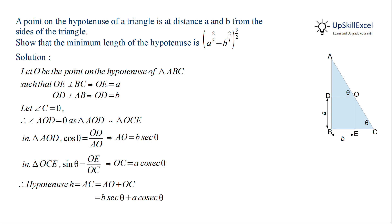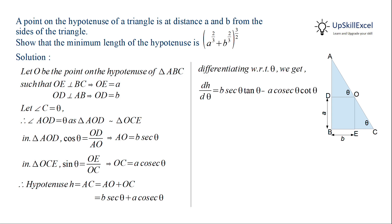To minimize the length of the hypotenuse, we differentiate H with respect to theta. This gives dH over d theta equal to B sec theta tan theta minus A cosec theta cot theta, where the derivative of sec theta is sec theta tan theta and the derivative of cosec theta is minus cosec theta cot theta. Setting this equal to zero gives B sec theta tan theta equal to A cosec theta cot theta.